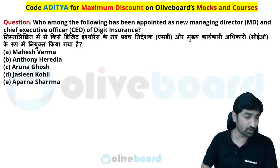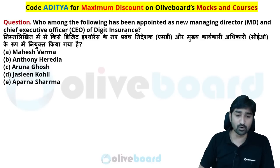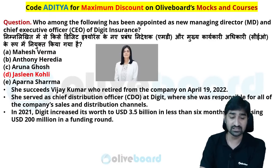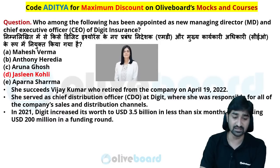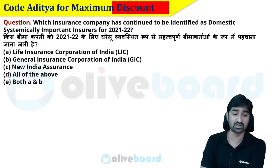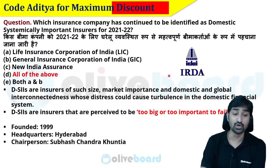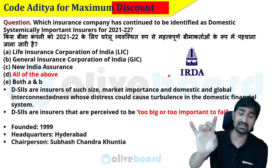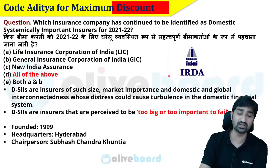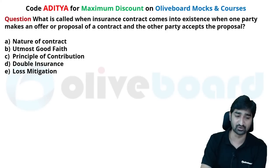Who has been appointed as the new Managing Director and CEO of Digit Insurance? The correct answer is Jasleen Kohli. Which insurance company has continued to be identified as a Domestic Systemically Important Insurer for 2021-22? The correct answer is LIC, GIC, and New India Insurance — they are considered too big to fail. This status was given by IRDA — Insurance Regulatory Development Authority of India.